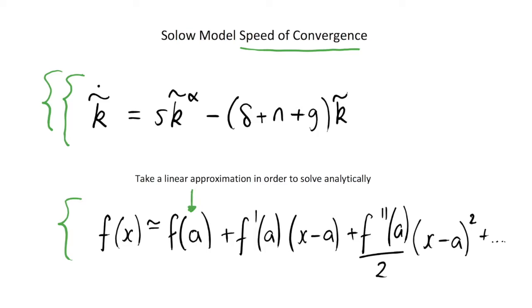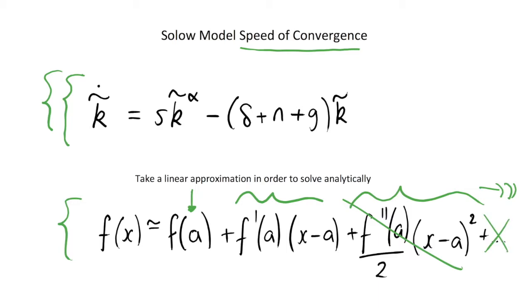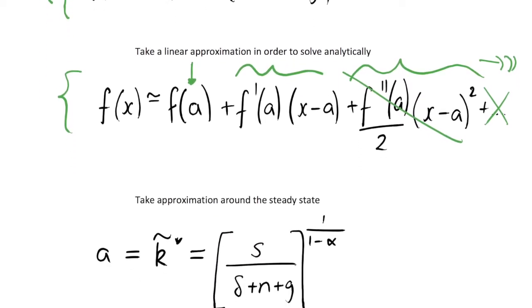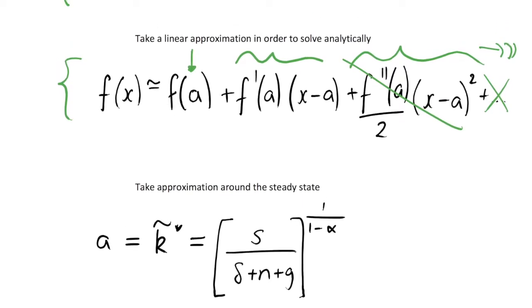The point that we're going to approximate around is point A. As we move slightly further away from that point, we consider how much the first derivative is going to change, the second derivative, and so on — third, fourth, fifth derivatives. However, for simplicity I'm only going to think about the first derivative, so we get rid of all the higher-order terms and we're just going to have a straight line whose slope is given by the tangent at the steady state point. So we're just going to be modelling a straight line through the steady state.